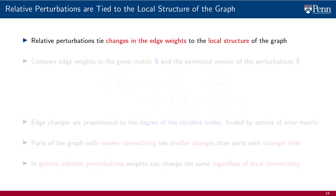More generically, the reason why relative perturbations are more meaningful than additive perturbations is because they tie changes in edge weights to the local structure of the graph. To explain what this means, compare edge weights in the matrix S and the matrix S hat with the permutation undone.